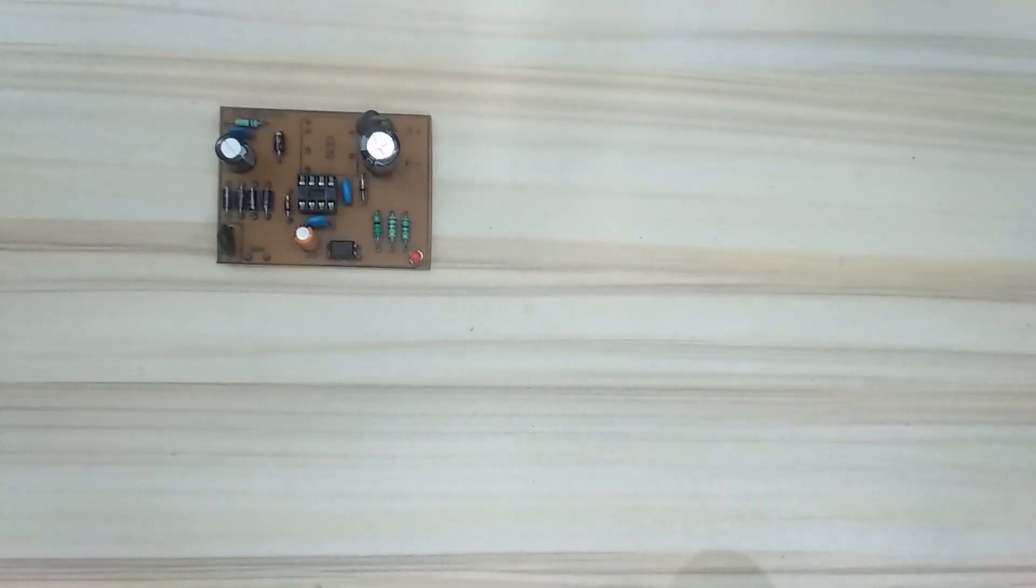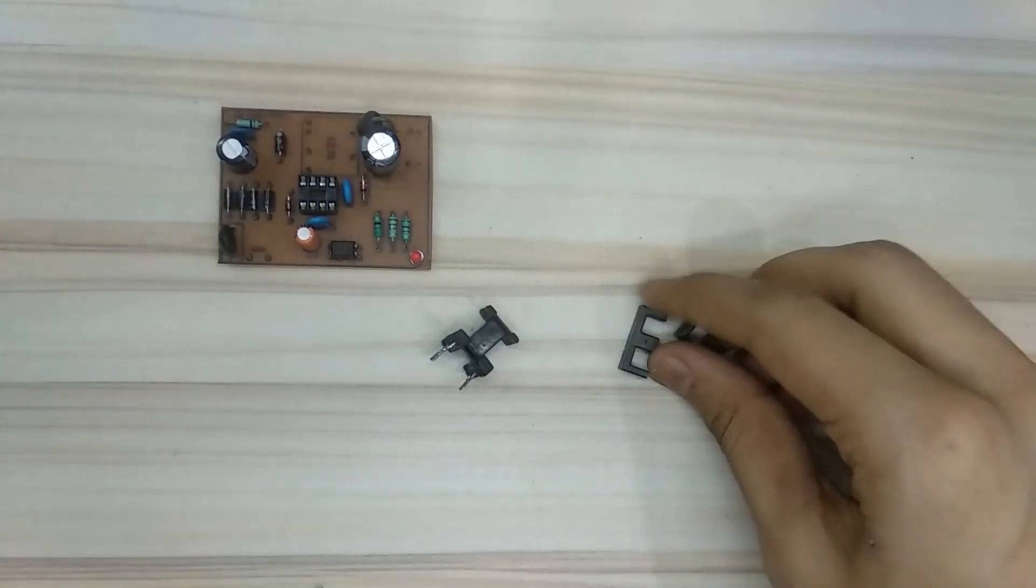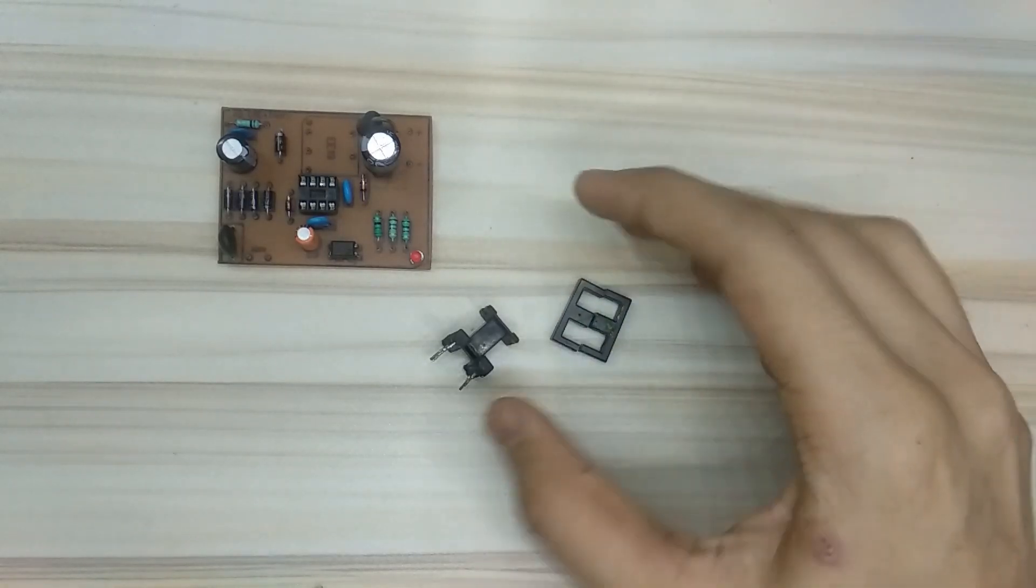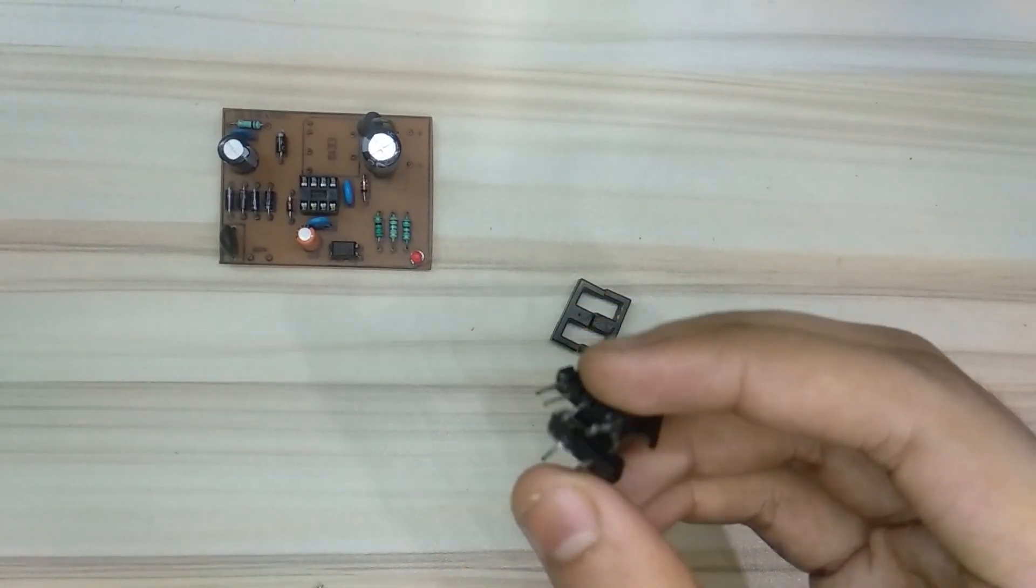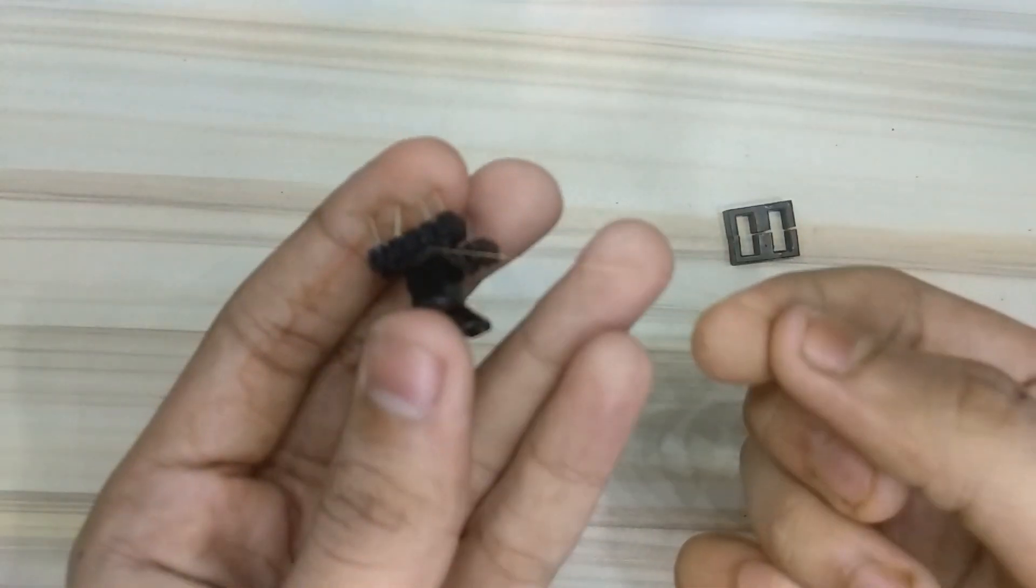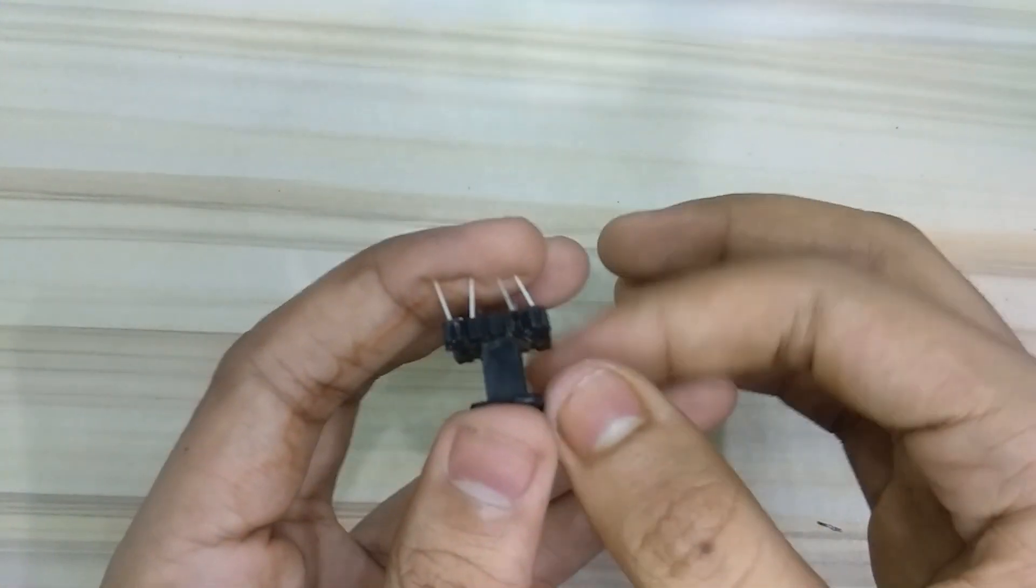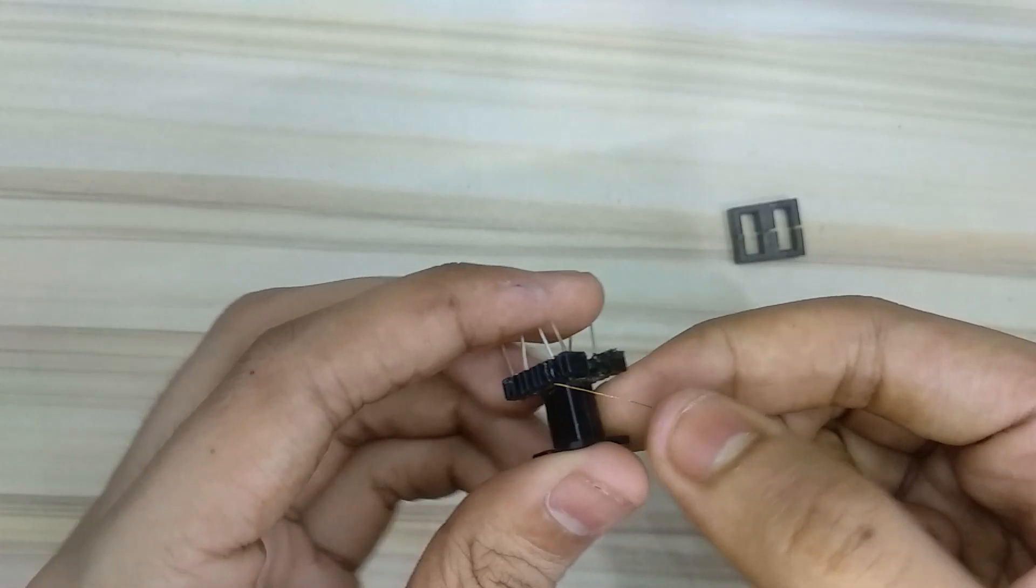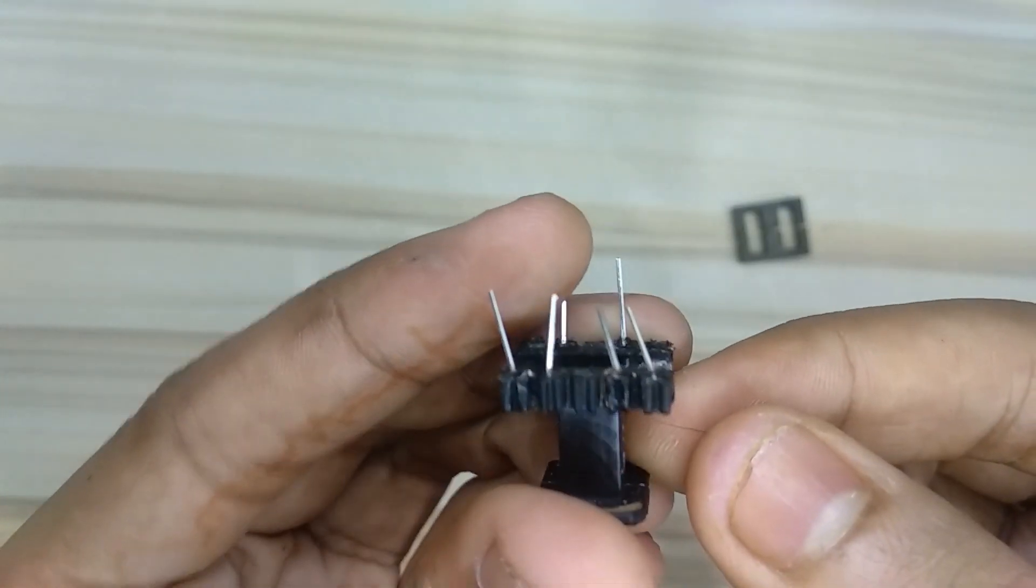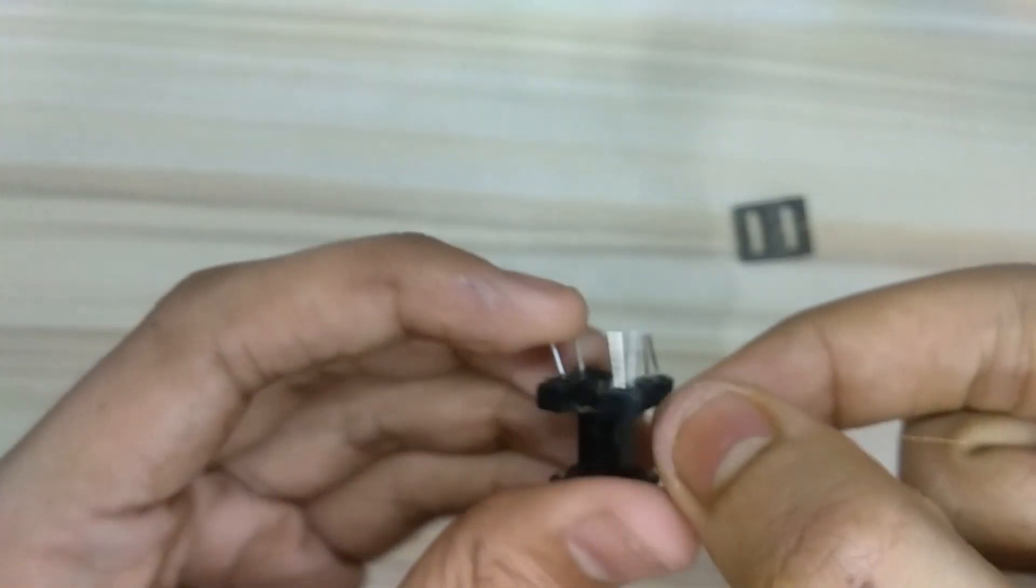So now let's wind the transformer. This is an EE-19 transformer with an air gap. As you can see, first let's wind the primary. For the primary I am using 0.1 mm copper wire from an old mini transformer. This is the starting point. Wind 196 turns like this.